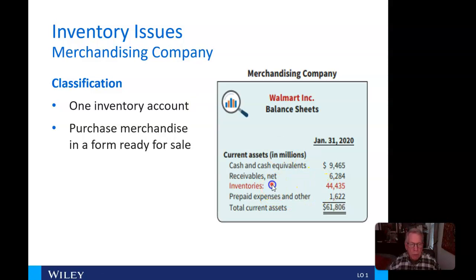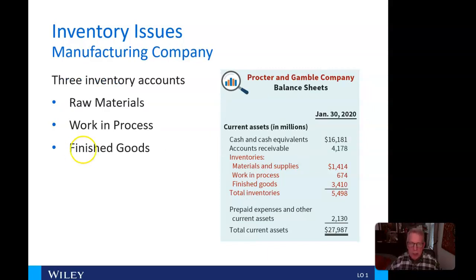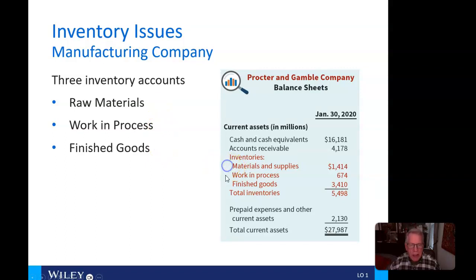Here is merchandise inventory — we purchase merchandise already in final goods form. An example would be Walmart; you go into the Walmart store, buy their finished goods, and away we go. Manufacturing companies have three inventory accounts: raw materials, work in process, and finished goods. We break them into these categories, as shown here for Procter & Gamble Company.